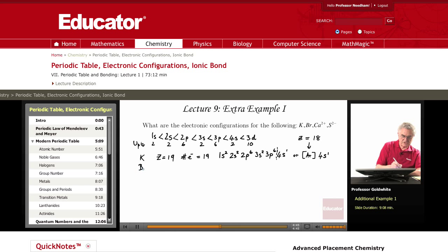Now let's go to the next neutral atom, bromine. Bromine has 35 electrons, and we follow the same scheme: 1s2, 2s2, 2p6, 3s2, 3p6, 4s2, and now 3d10.